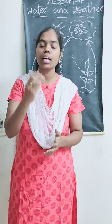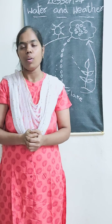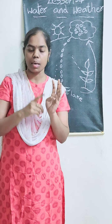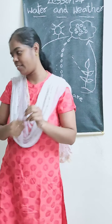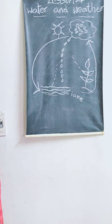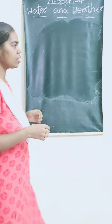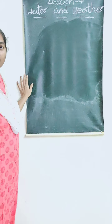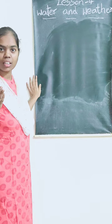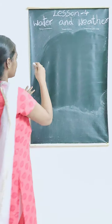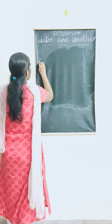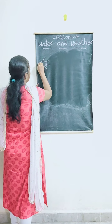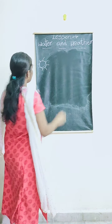How many main seasons are there in our India? Three main seasons: summer season, rainy season, and winter season. We all know about this. Sun rises in which direction? Yes, in the east direction.